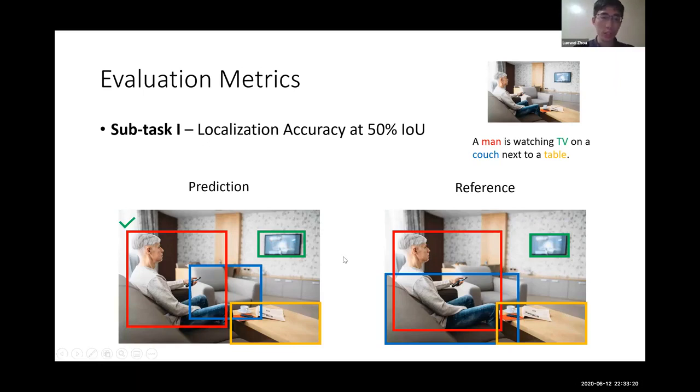For the third bounding box, the blue one, the prediction locates a wrong couch and the overlapping is lower than 50%. So that's an incorrect box.